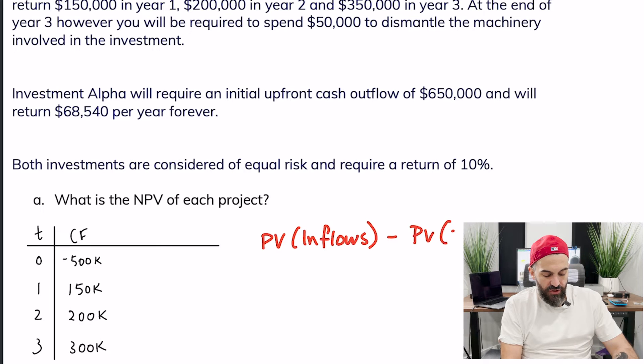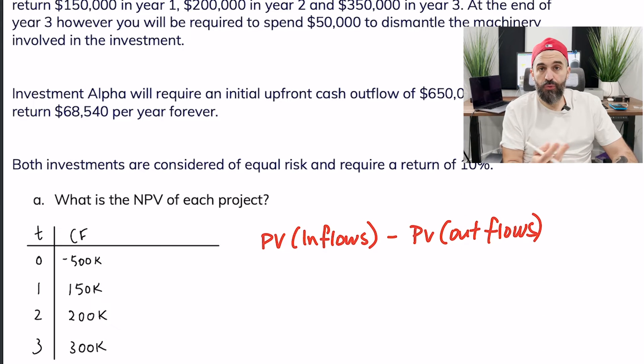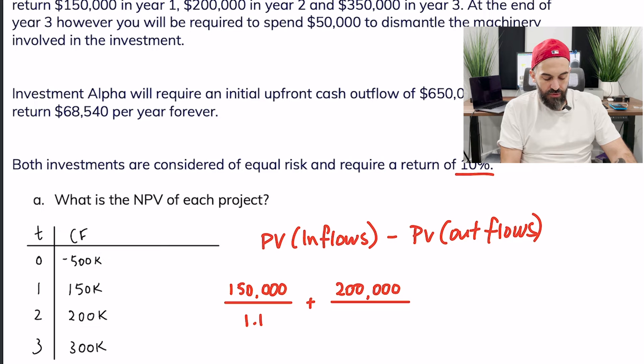So my inflows are $150,000 in one year and the required rate of return or the cost of capital is 10%, so I know that I can discount this at 10% for one year. I'll do the same for the next one, 10% for two years and the last one.